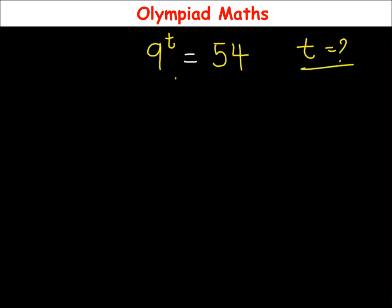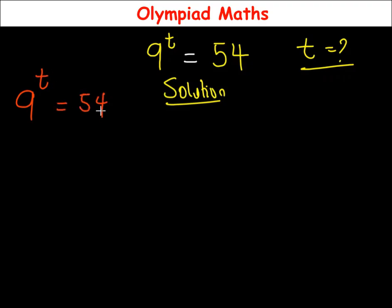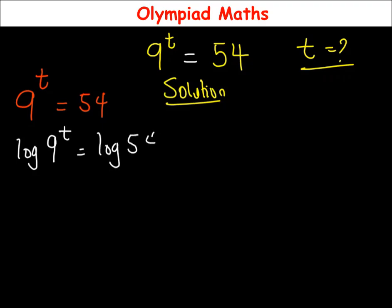To solve this equation — 9 raised to power t is equal to 54 — the first thing we're going to do is to introduce log to both sides of the equation. So log of 9 raised to power t is equal to log of 54.